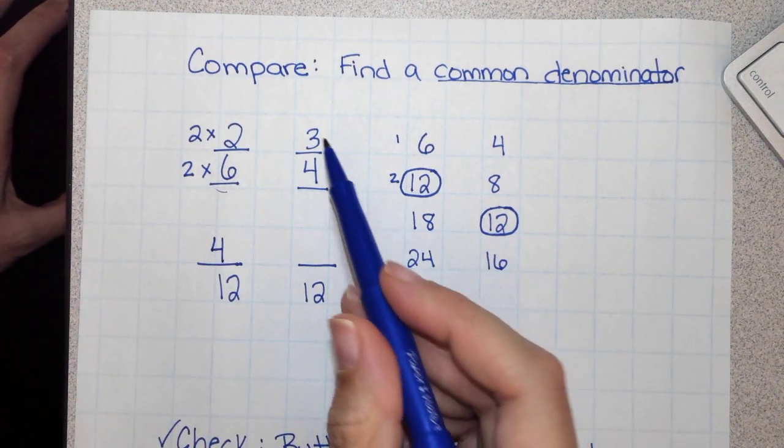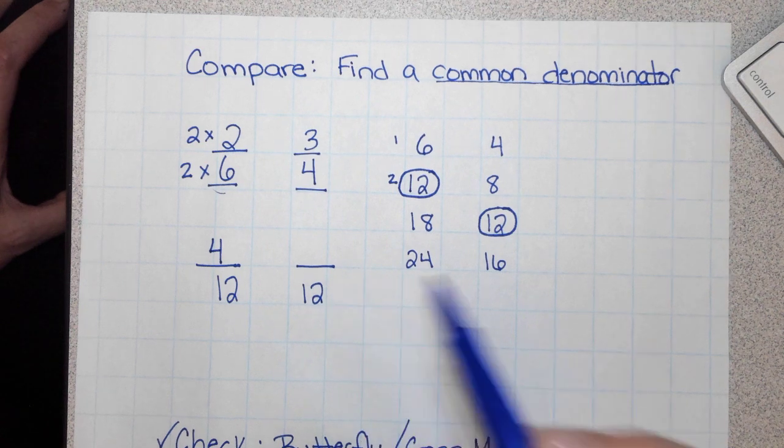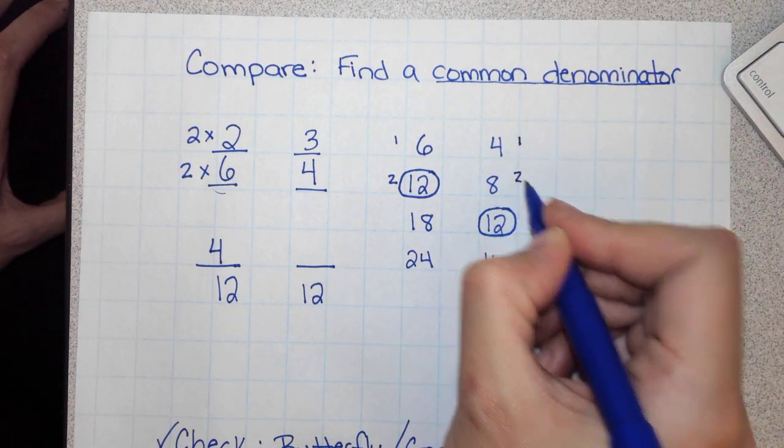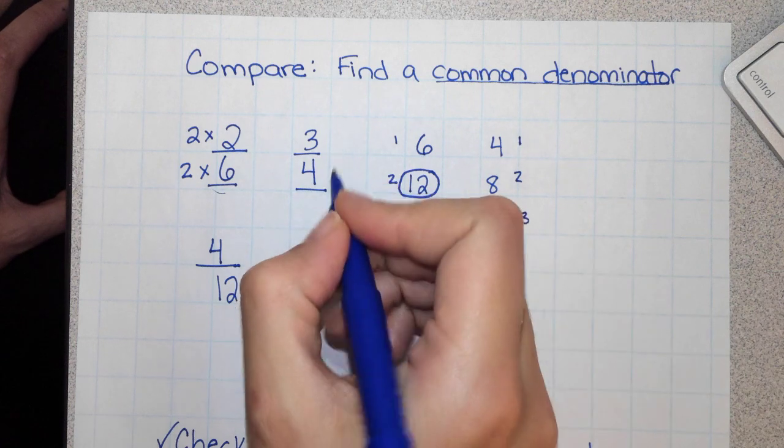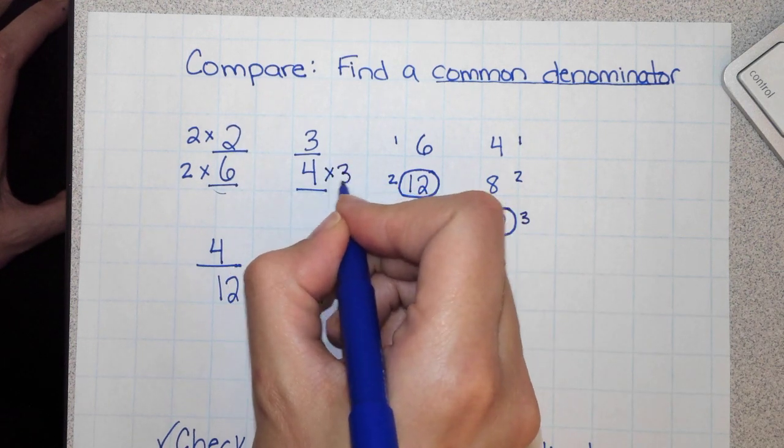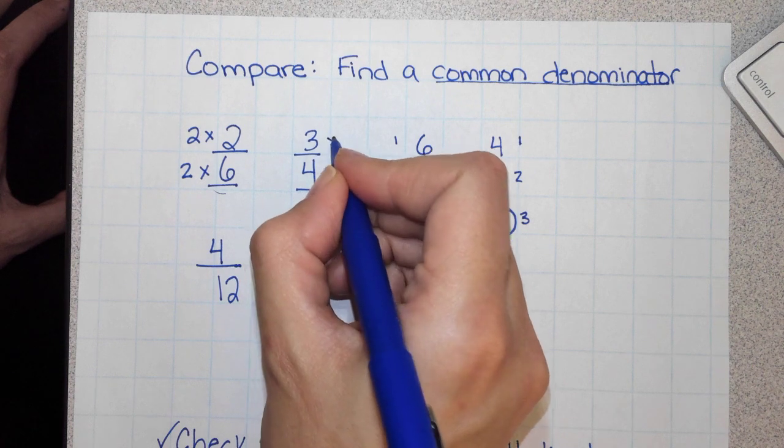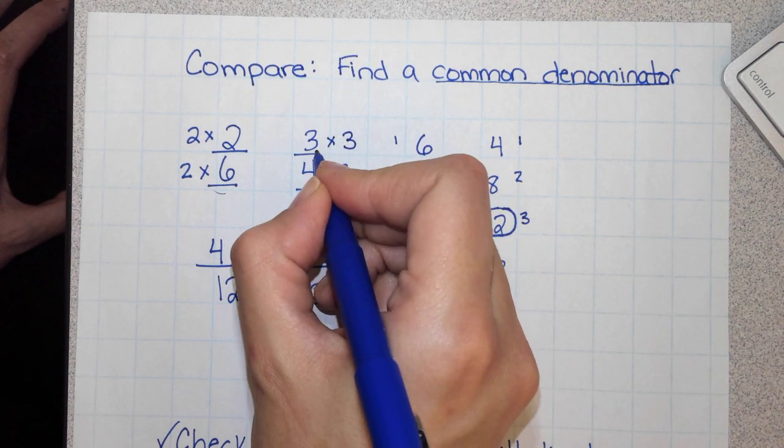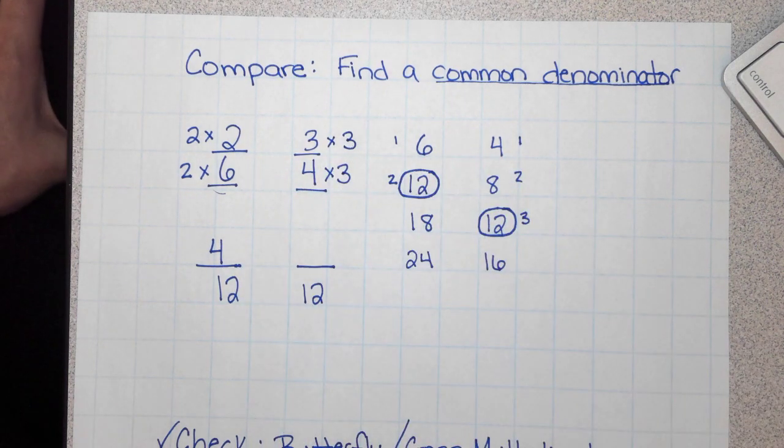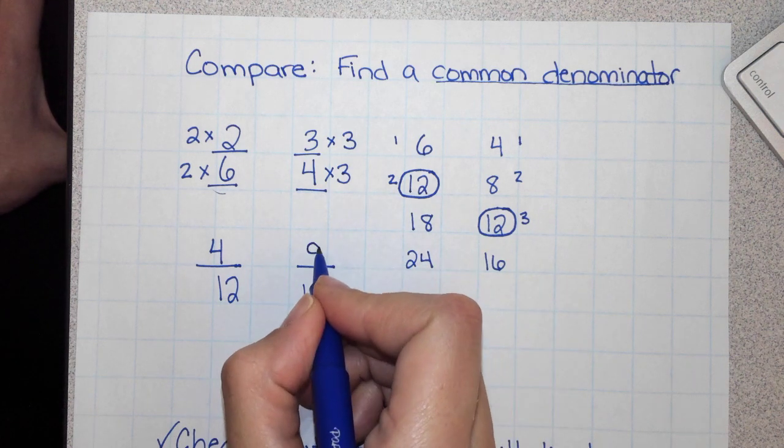Then I need to look at 3 fourths and find the equivalent fraction. So here I multiplied 4 times 3 to get 12. Whatever I do to the bottom, I need to do to the top. So I need to multiply by 3. So 3 times 3 equals 9.